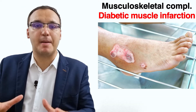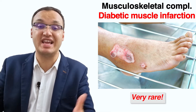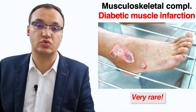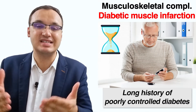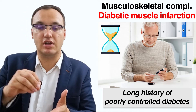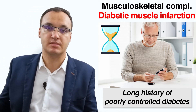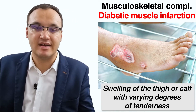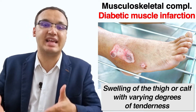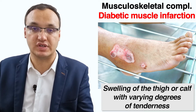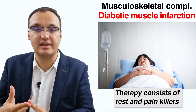Diabetic muscle infarction is very rare. Without a history of trauma, this spontaneous infarction tends to affect patients with a long history of diabetes. There is tenderness that worsens over days or weeks, and it is usually diagnosed by the elimination of other possible causes. Therapy consists of rest and painkillers.